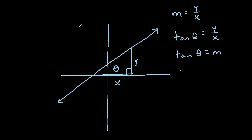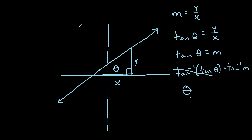Now to solve for theta, we can take the inverse tangent of each side. So we'll say the inverse tangent of the slope. On the left-hand side, the tangent and the inverse tangent cancel out, and we're just left with theta. So theta is equal to the inverse tangent of the slope. So if you are given the slope m, you can calculate the angle of inclination of the line using this formula. Let's check out a couple of examples of how to use this formula in practice.